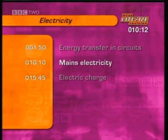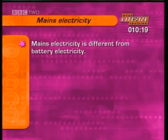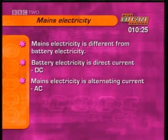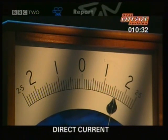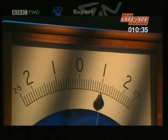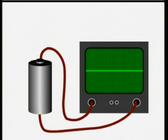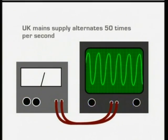This section is about mains electricity. The important thing to know about mains electricity is that it's different from battery electricity. Battery electricity is direct current, DC, while mains electricity is alternating current, AC. A battery supplies a steady voltage, so the trace on a cathode ray oscilloscope is a straight line. The voltage of an alternating current supply is changing all the time — the mains supply in the UK changes 50 times a second.